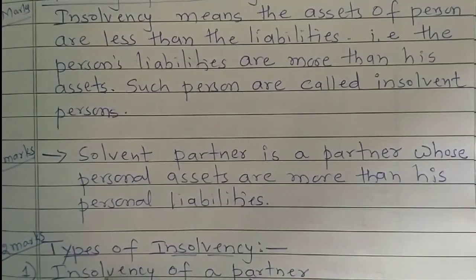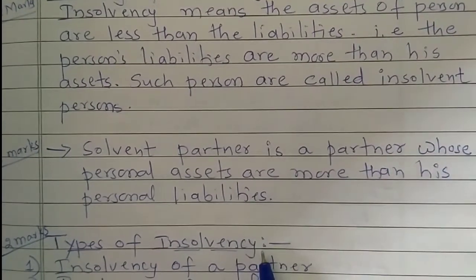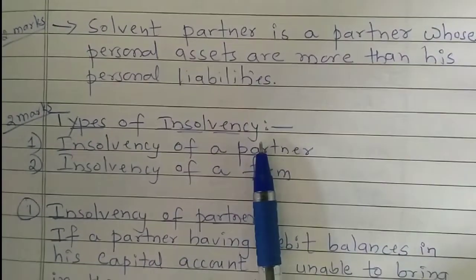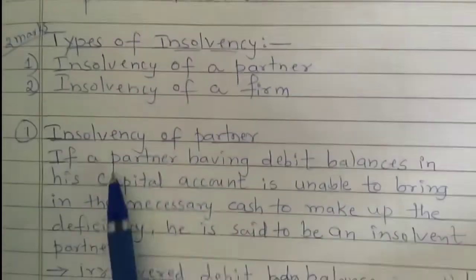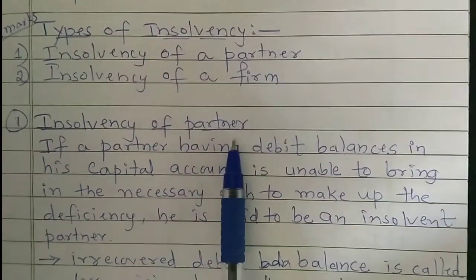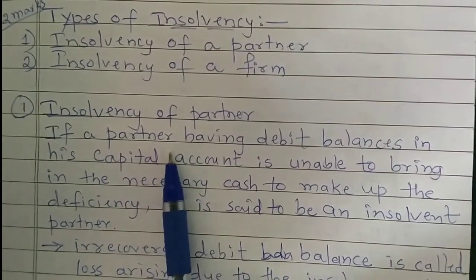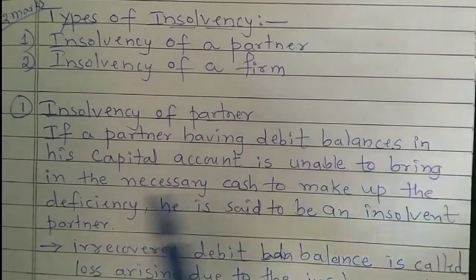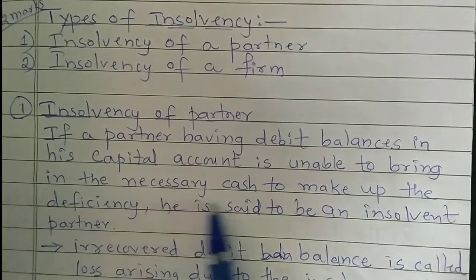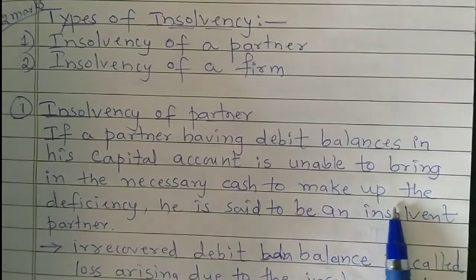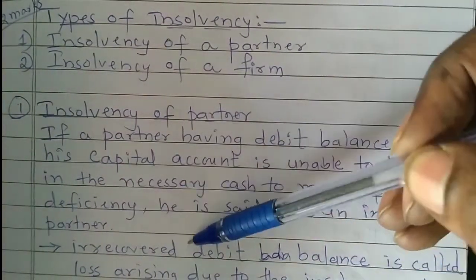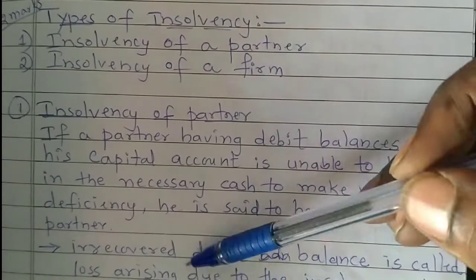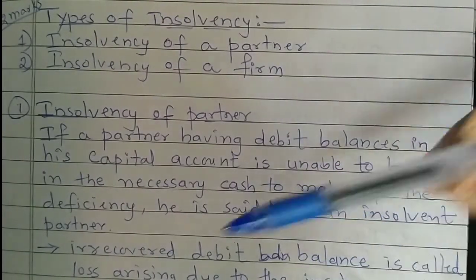Now in today's class let us know the types of insolvency and the insolvency laws applicable in India. There are two types of insolvencies: one, insolvency of a partner, and two, insolvency of a firm. Insolvency of a partner: if a person or partner having a debit balance in his capital account is unable to bring the necessary cash to make up the capital deficiency, he is said to be an insolvent partner. The irrecoverable debit balance is called a loss arising due to insolvency.